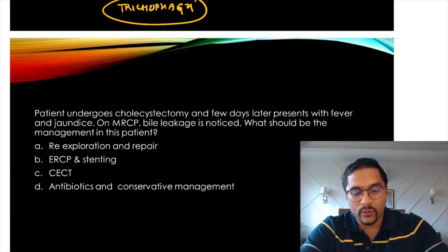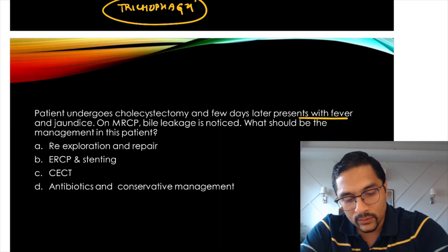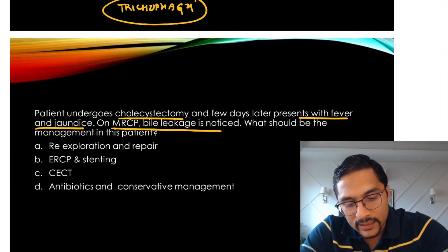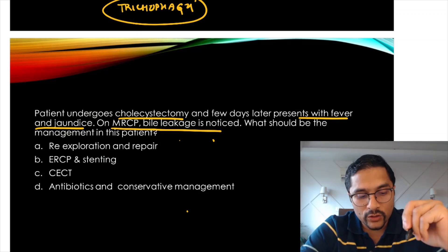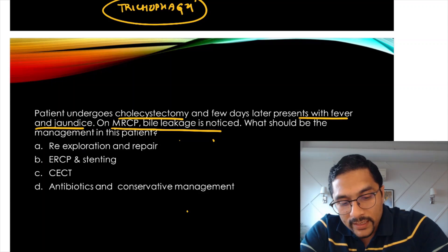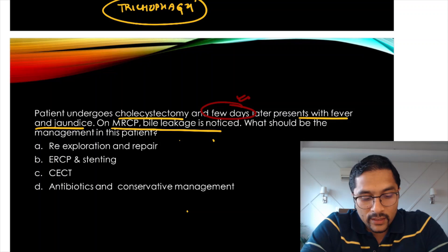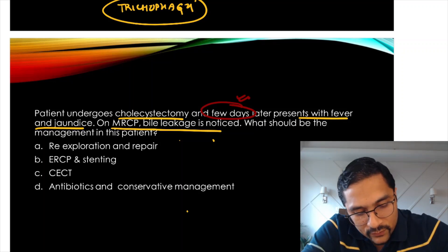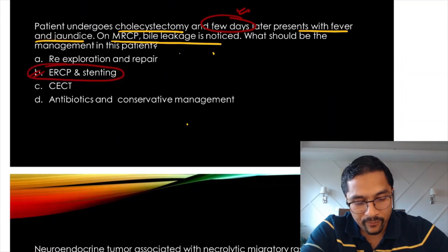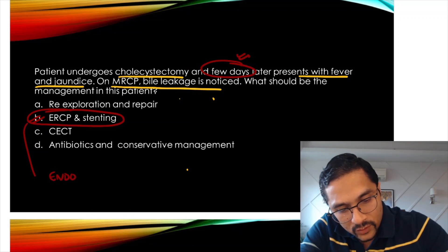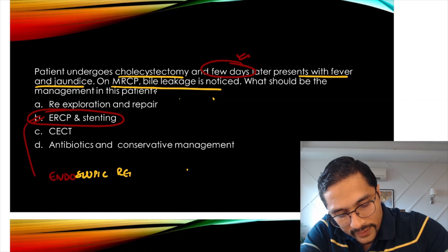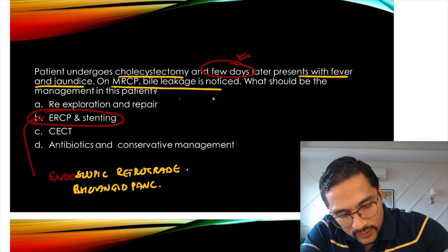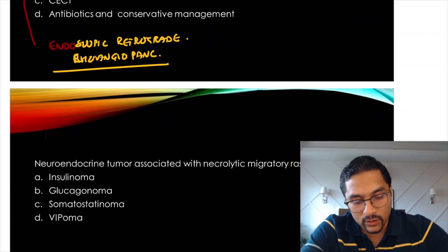A patient who underwent cholecystectomy a few days back now comes with fever and jaundice. MRCP reveals bile leakage. Because it has been a few days, we cannot re-explore since sutures won't hold. So if it is a few days later, we will do ERCP and stenting — endoscopic retrograde cholangiopancreaticography — and put a stent through the leak so that the leak stops. This question has been asked many times in the exam.